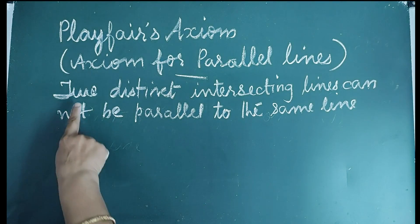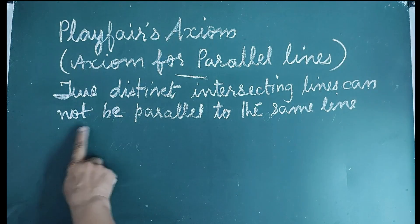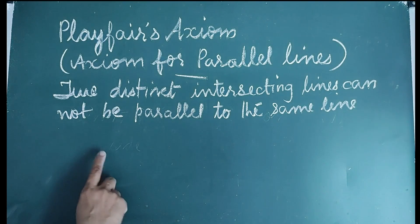In other words, two distinct intersecting lines cannot be parallel to the same line. We can understand this through a figure.